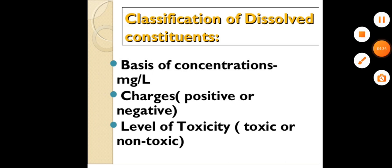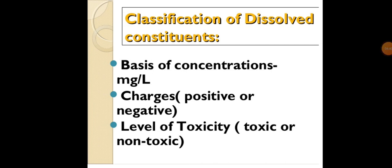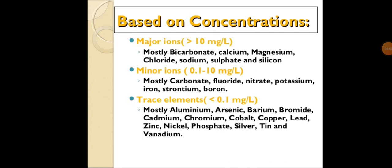Classification of dissolved constituents is based on: concentrations in mg per litre, charges (positive or negative), and levels of toxicity. Based on concentration: major ions are greater than 10 mg per litre — mostly bicarbonate, calcium, magnesium, chloride, sodium, sulfate and silicon. Minor ions are 0.1 to 10 mg per litre — mostly carbonate, fluoride, nitrate, potassium, iron, strontium and boron. Trace elements are less than 0.1 mg per litre — mostly aluminum, arsenic, barium, bromide, cadmium, chromium, cobalt, copper, lead, zinc, nickel, phosphate, silver, tin and vanadium.